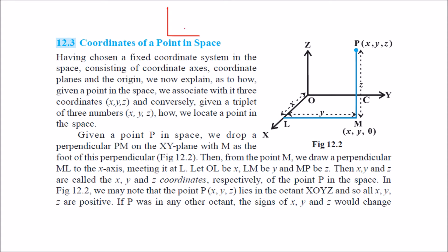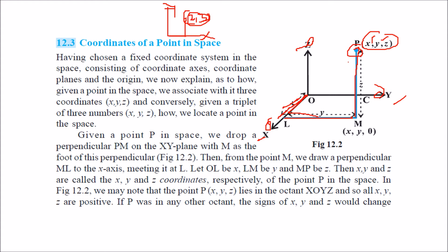Any point can be easily found. For example, if it is (2, 3), you move 2 in the x direction and 3 in the y direction. But in 3D, you have x, y, and z coordinates. So you move x distance in the x direction, y in the y direction, and z in the z direction. These three movements give you the point (x, y, z), which has a specific coordinate in your 3D space.